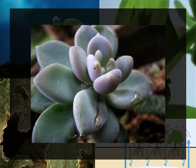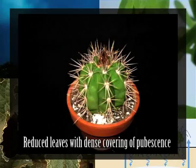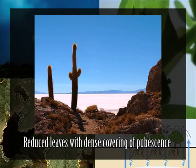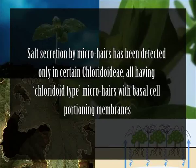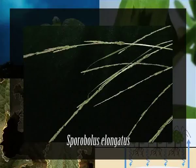Many salt-tolerant plants, particularly dicotyledonous halophytes, are characterized by xeromorphic features such as thick, succulent leaves which apparently aid sufficient water storage. Smaller, reduced leaves with a dense covering of pubescence are also characteristic of xerophytes, accounting for successful survival of halophytes under dryland salinities. Salt secretion by micro-hairs has been detected only in certain chloride-type micro-hairs with basal cell-partitioning membranes; it has not been detected in many species with micro-hairs that lack basal cell-partitioning membranes.